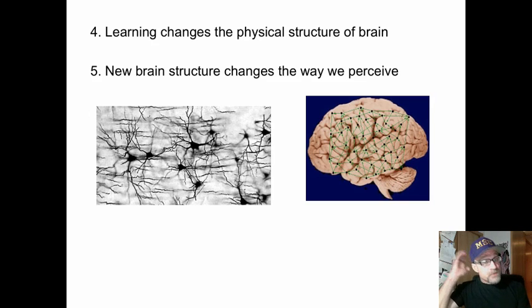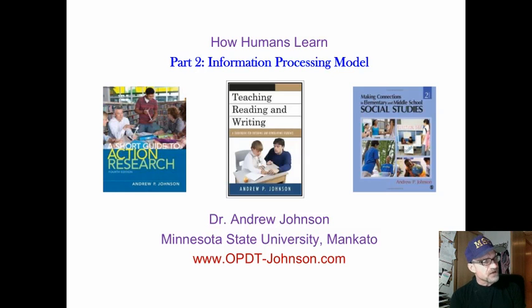We know new brain structures change the way we perceive. We perceive each of us, the world, differently because our brain is structured differently. We have different amounts of knowledge. So, you see how these two interact in a very interesting way. Part two, we will be looking at the information processing model.